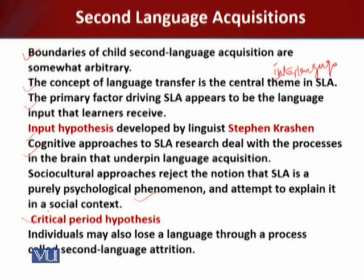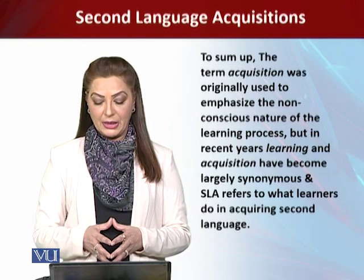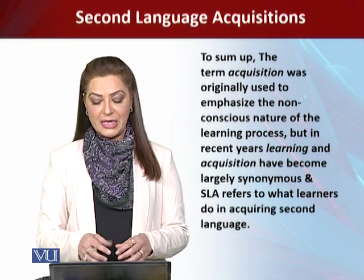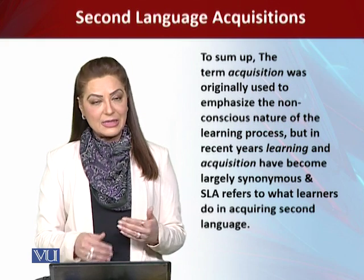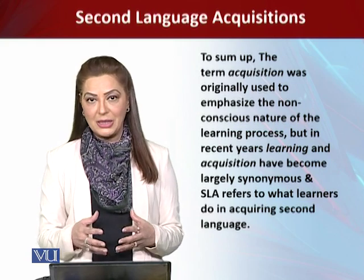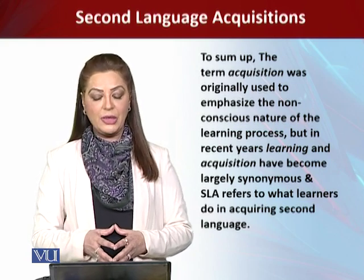The critical period hypothesis states that individuals lose the ability to fully learn a language after a particular age in childhood. Individuals may also lose a language through a process called second language attrition — the decline of second language skills that occurs whenever the learner uses the second language to an insufficient degree, or due to environmental changes where another language becomes dominant. To conclude, the term acquisition was originally used to emphasize the non-conscious nature of the learning process, but in recent years learning and acquisition have become largely synonymous, and SLA refers to what learners do in acquiring a second language.